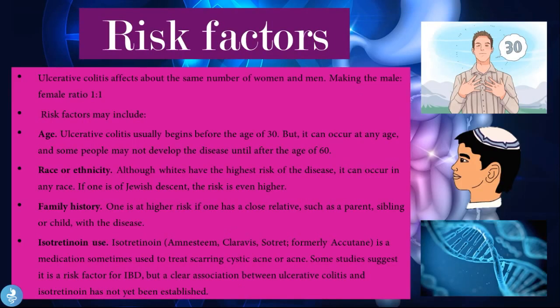Risk factors: Ulcerative colitis affects the same number of women and men, making the male to female ratio 1 to 1. Risk factors include age — it usually begins before age 30, but can occur at any age, and some people may not develop the disease until after age 60. Race or ethnicity — whites have the highest risk, and those of Jewish descent have an even higher risk. Family history — having a close relative such as a parent, sibling, or child with the disease increases risk. Isotretinoin use, a medication for acne, has been suggested as a risk for IBD, but a clear association with ulcerative colitis has not yet been established.